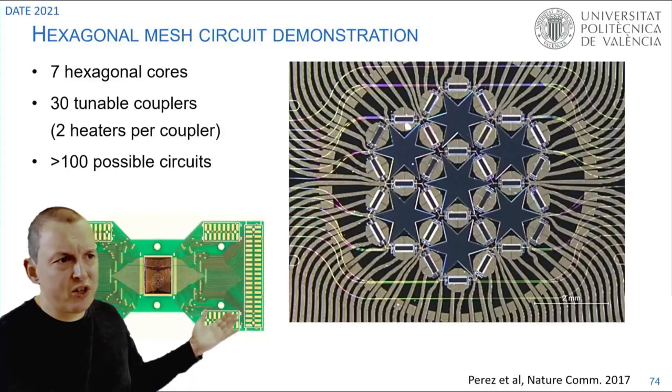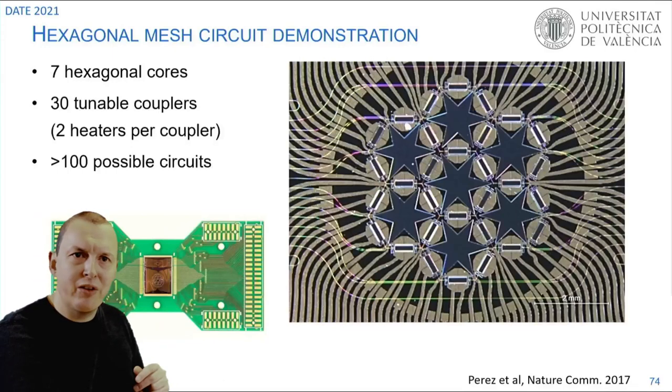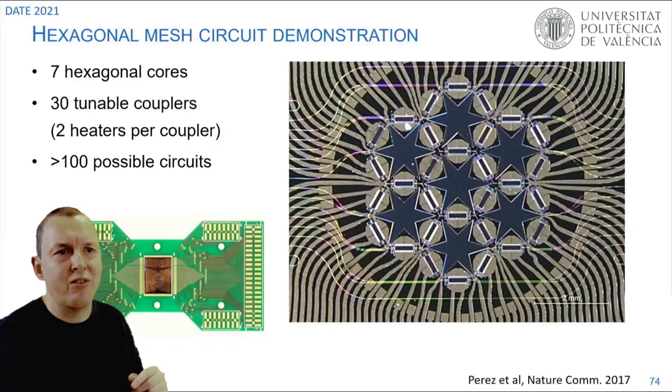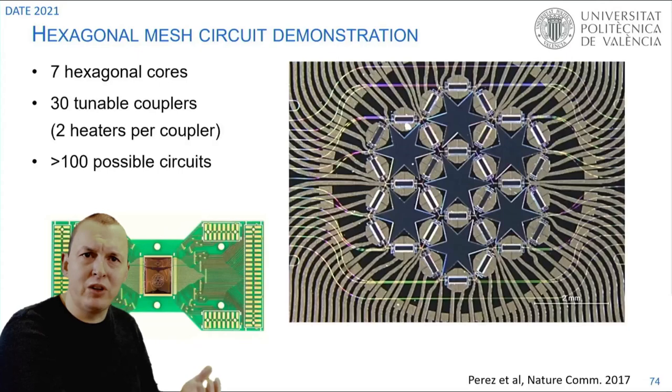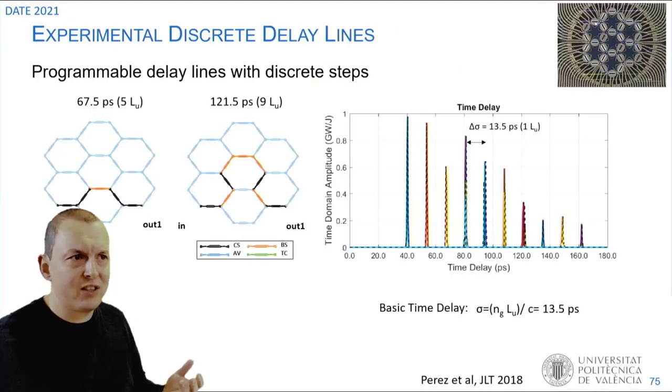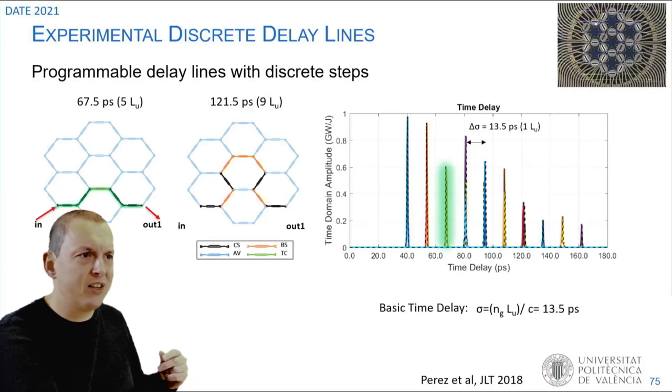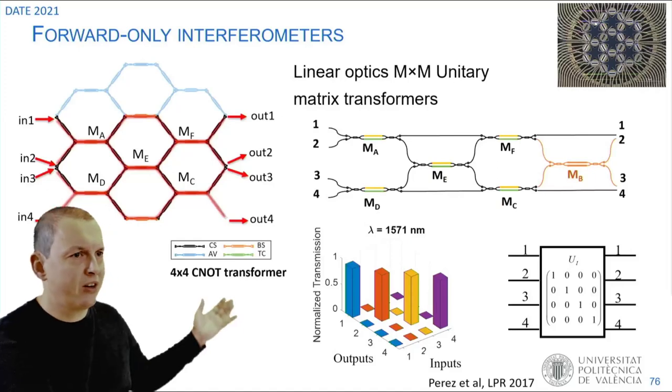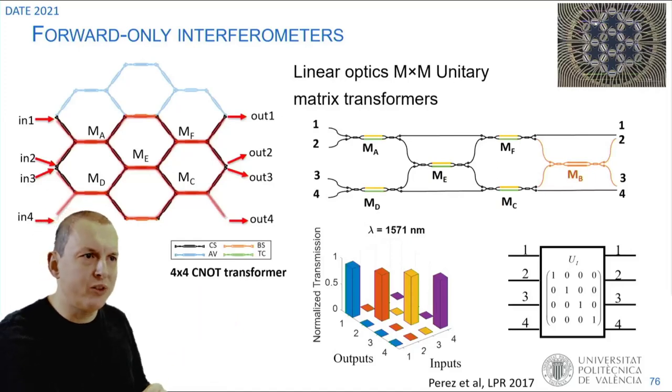The first demonstration of such a mesh was done by the Polytechnical University of Valencia. They built a mesh which had seven hexagonal cells. Already you can do more than 100 different circuits in there, like for instance different delays. You can make a delay line that has different delays by just rerouting your light in a different way. You can even configure these circuits to perform as a forward only interferometer, like in this case a 4x4 port interferometer.